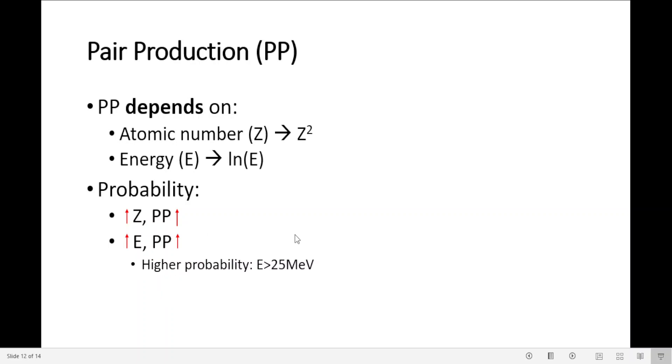There is a higher probability for pair production to happen if energy is greater than 25 megaelectronvolts.